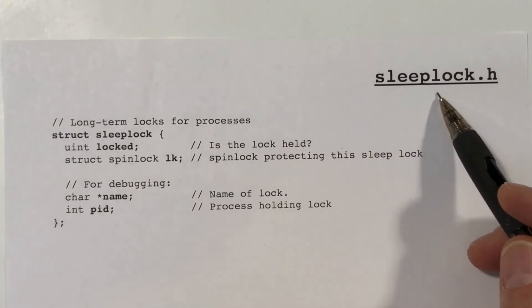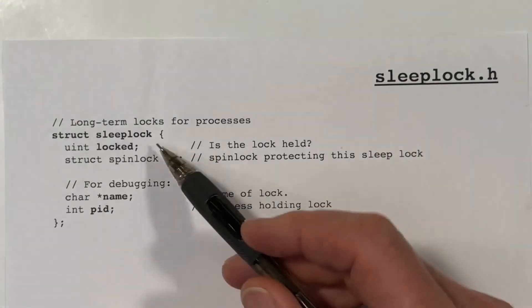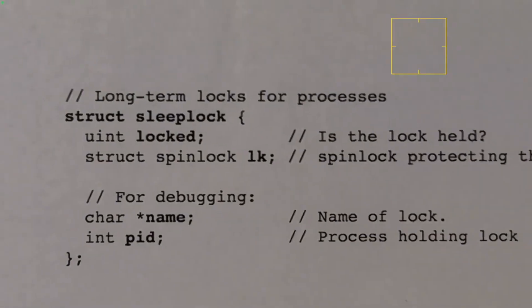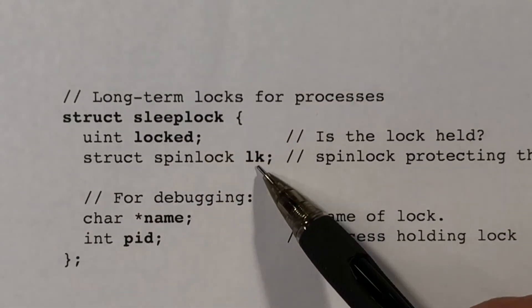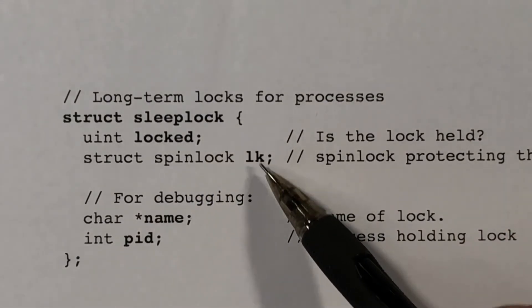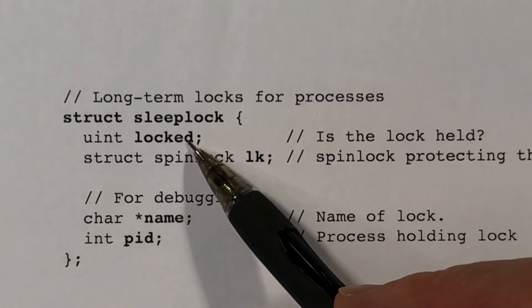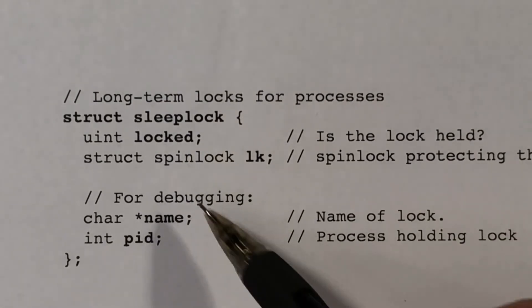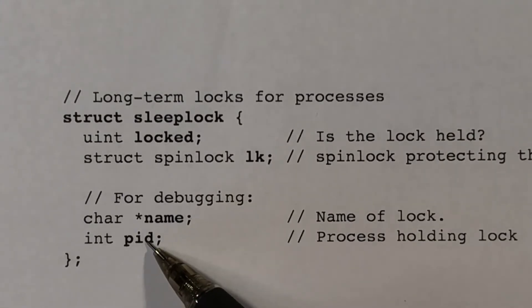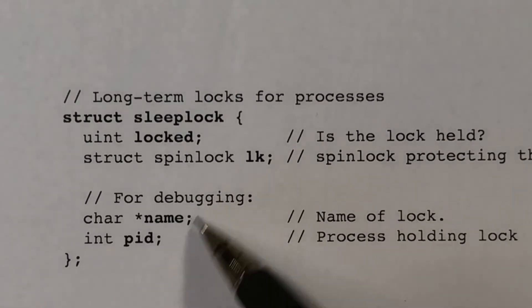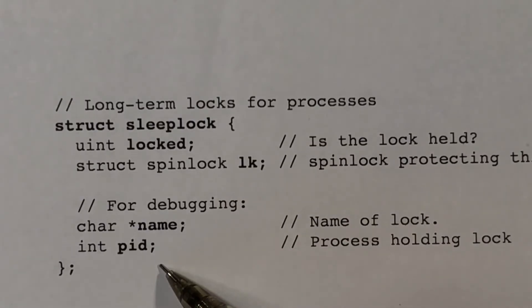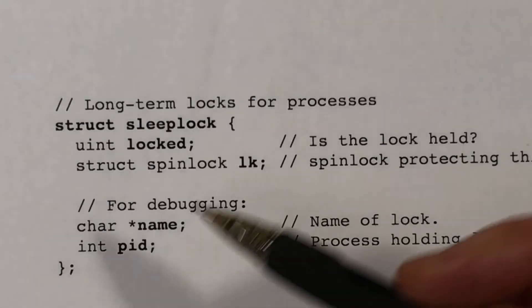First, let's look at how the sleep lock is defined. So it's a structure called a sleep lock, and it has a flag variable, which is one if the lock is held, and zero if the lock is free and available. And then it has a spin lock, and this spin lock protects the other fields. It protects the lock field in particular. We also have a name field and a process ID field, which are used. We can set those and then print them out if we need to during debugging. So those are not really critical to the functions.